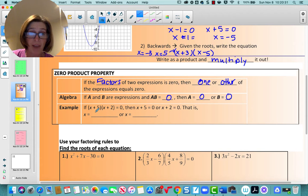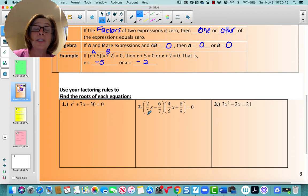The example, here we have a factored polynomial, that's a, that's b. So then x plus five equals zero, or x plus two equals zero. So x equals negative five, or x equals negative two. Again, a reminder of the zero product property.